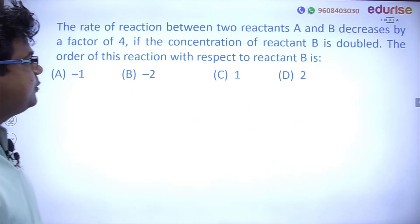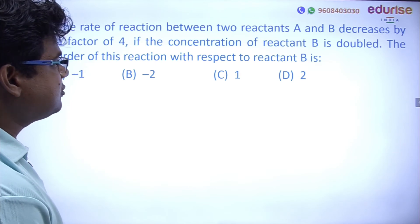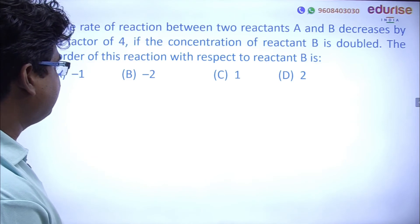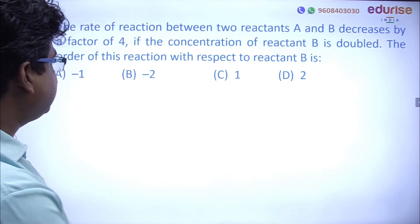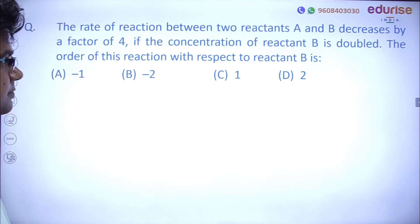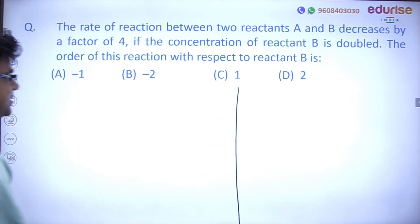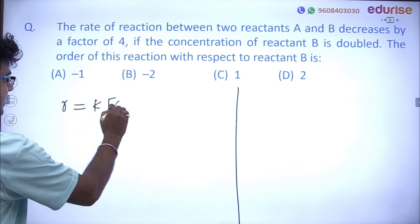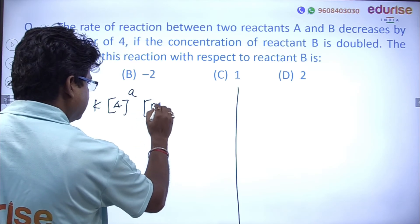Next question: the rate of reaction between two reactants A and B decreases by a factor of 4 if the concentration of reactant B is doubled. The order of this reaction with respect to reactant B — what will it be? First, we write the rate law expression: rate = k[A]^a [B]^b.